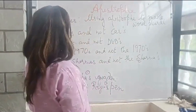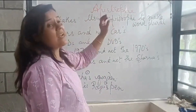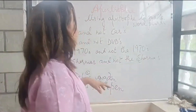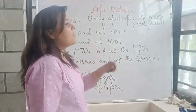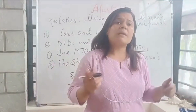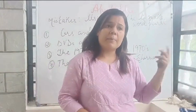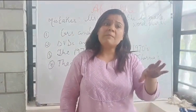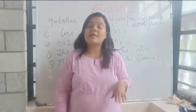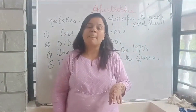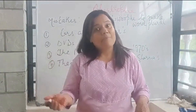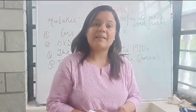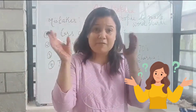Now the most common mistake that we make while using apostrophes is to make words plural. We use apostrophes to make words plural — plural means adding S by default, we know that. But what do we do? We incorrectly use apostrophes to make that S, which only creates confusion.